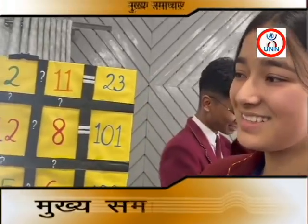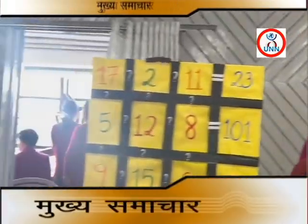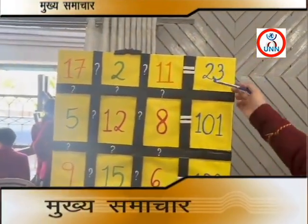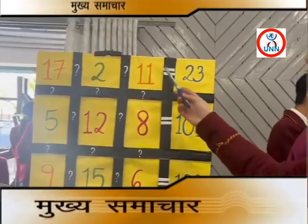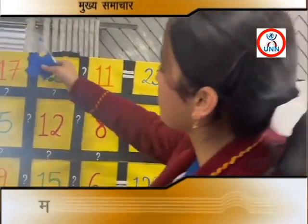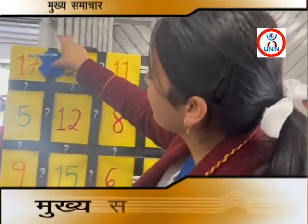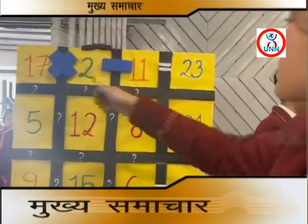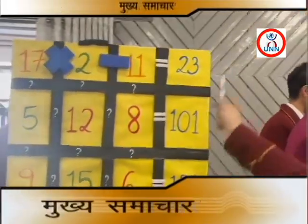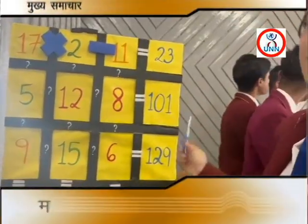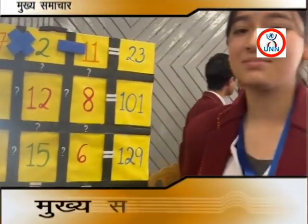In this game, the answers are given but the signs are missing, so we have to put the signs in. For example, this gives us 23. That's it — it's called Target Takedown.